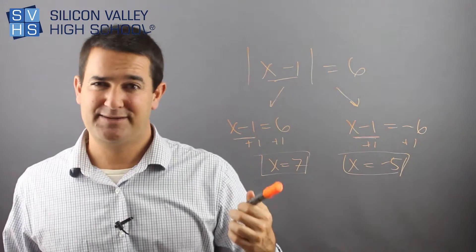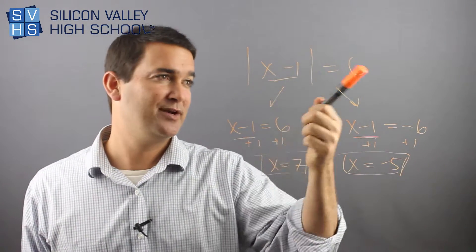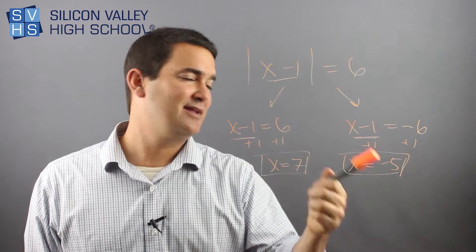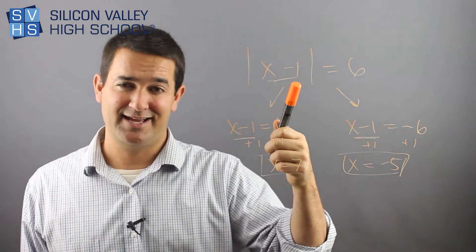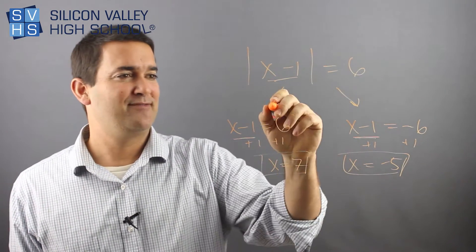And really, if you plugged them in, you could verify that this works. If you put 7 in here, 7 minus 1 is 6. If you put negative 5 in here, negative 5 minus 1 is negative 6, absolute valued makes that positive 6.